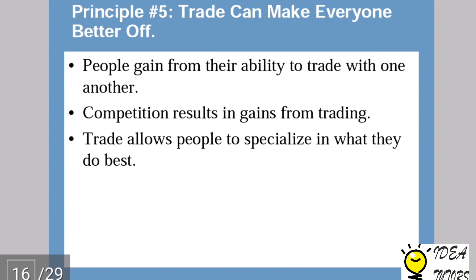The fifth principle is: trade can make everyone better off. People gain from their ability to trade with one another. An economy is endowed with limited resources, so it can produce limited quantities of goods, but if it can trade with other economies it can expand the quantity of a particular good. If something is produced in less quantity in the domestic economy, we can import the extra required from another country. Competition results in gains from trade, and trade allows people to specialize in what they do best.